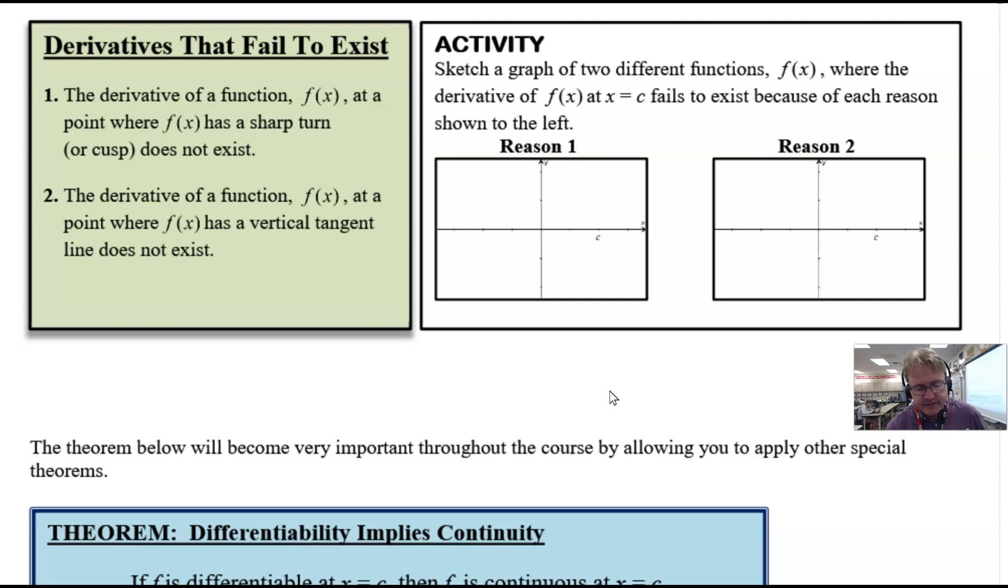It says the derivative of a function f(x) at a point where f(x) has a sharp turn or cusp does not exist; the derivative of a function f(x) at a point where f(x) has a vertical tangent line doesn't exist. For this activity, they wanted you to sketch a graph of two different functions where the derivative of f(x) at some c fails to exist because of each reason shown to the left. It would be a great time if you wanted to pause the video, try to sketch those two reasons, see if your results match my results.